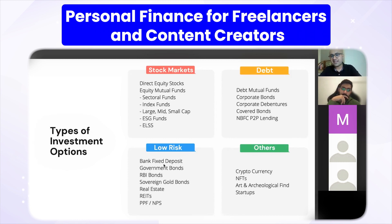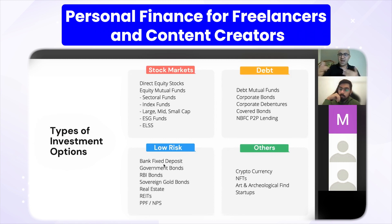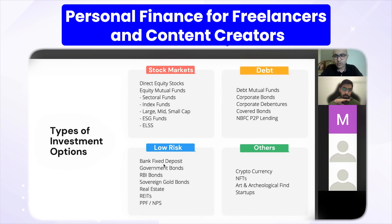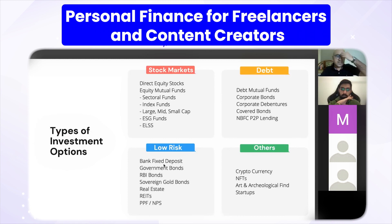ELSS stands for equity-linked savings scheme — these are equity mutual funds. If you want to invest in debt, there are debt mutual funds, corporate bonds, corporate debentures, and covered bonds. CRED is trying to get into P2P lending, and there are many non-banking financial corporation apps. P2P lending is very, very risky — might as well avoid that. Low-risk investments include bank FDs, government bonds, RBI bonds, and sovereign gold bonds. We'll cover PPF and NPS in coming slides — these are great tax-saving investments.